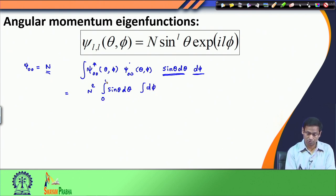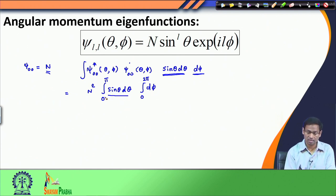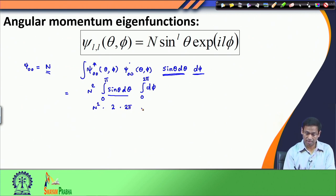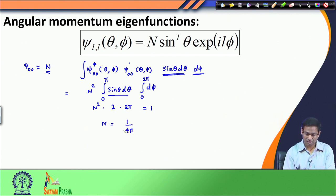The integral of sin(theta)d(theta) goes from 0 to pi, and d(phi) goes from 0 to 2pi. When I integrate sin(theta) I get minus cos(theta), and putting in the limits 0 and pi gives 2. When I integrate d(phi) from 0 to 2pi I get 2pi. So N^2 times 4pi equals 1, and therefore N becomes 1 over the square root of 4pi.